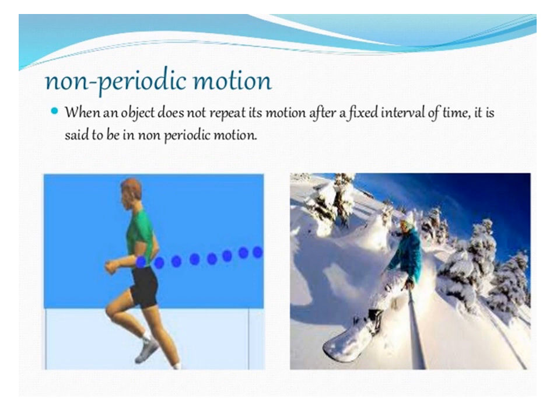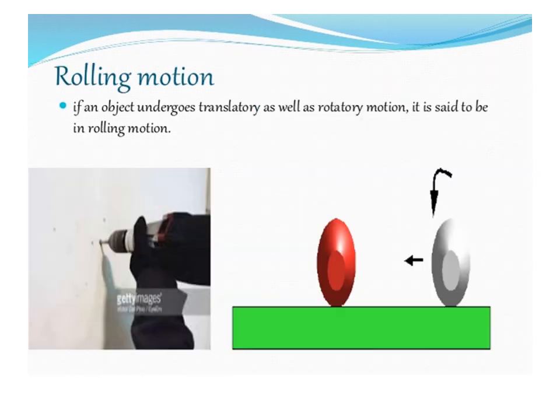Non-periodic motion: when an object does not repeat its motion after a fixed interval of time, it is said to be in non-periodic motion.